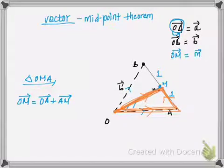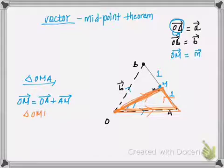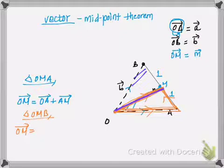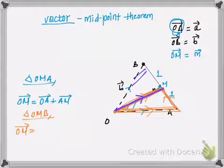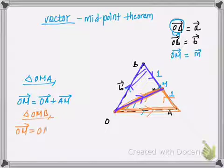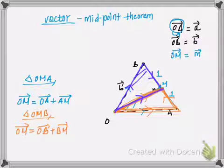In the second part, I'm going to take triangle OMB. Using the same concept, vector OM in this triangle means moving from point O to M is the same as moving from O to B and then B to M. So I can write vector OM is equal to vector OB plus vector BM.